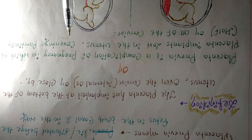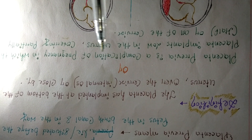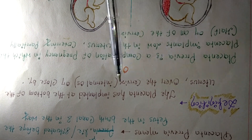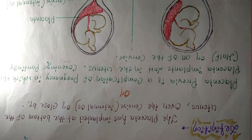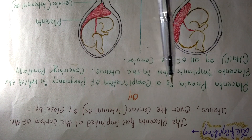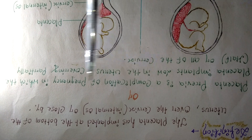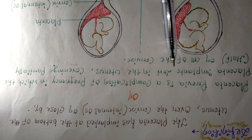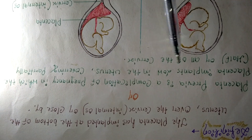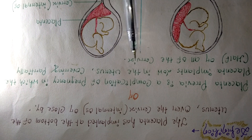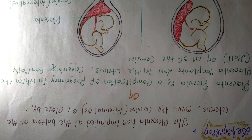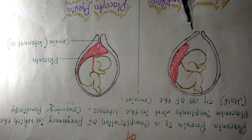Another definition: placenta previa is a complication of pregnancy in which the placenta implants low in the uterus, in the lower portion, covering partially or completely the cervix. It covers the cervix either partially or completely.